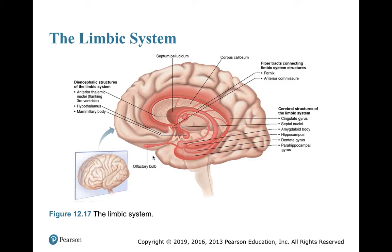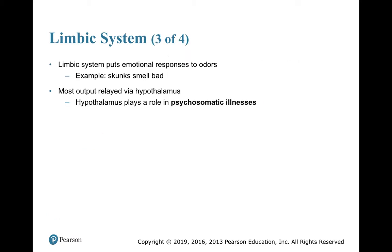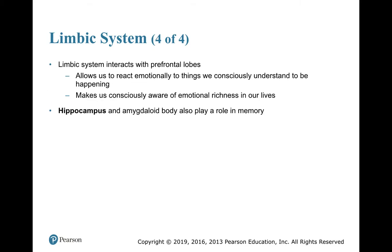Here is a broad picture of the limbic system. It puts emotional responses to odors — the limbic system is why we think skunk odor is bad. Most of its output is relayed through the hypothalamus, which has a role in psychosomatic illnesses. It interacts with the prefrontal lobes, helping us react emotionally to things we consciously understand. It makes us consciously aware of the emotional richness in our lives. The hippocampus and amygdaloid body also play a role in memory.